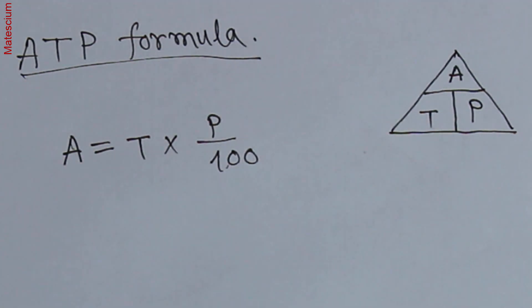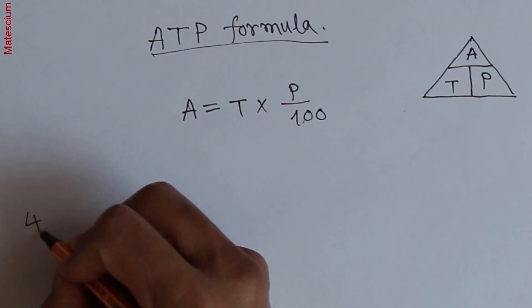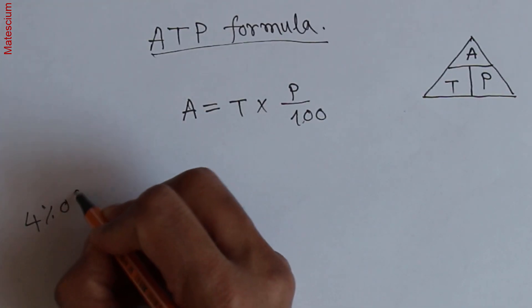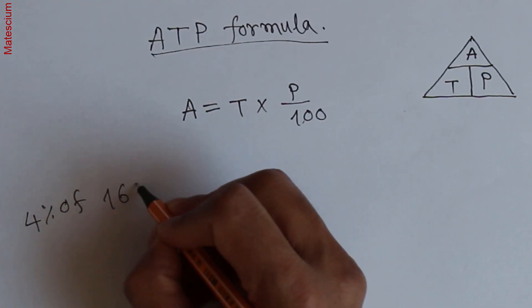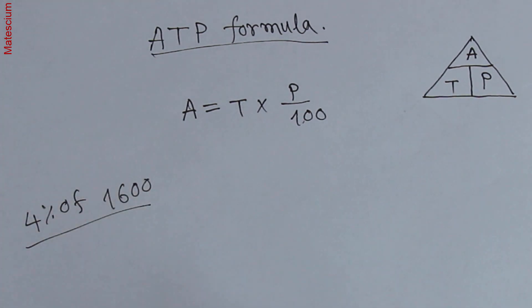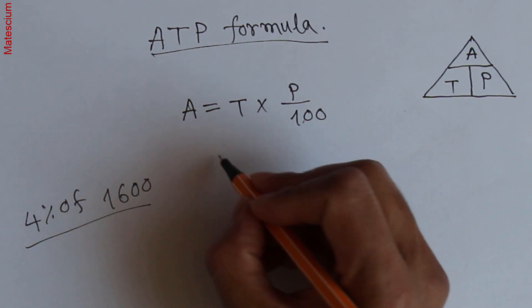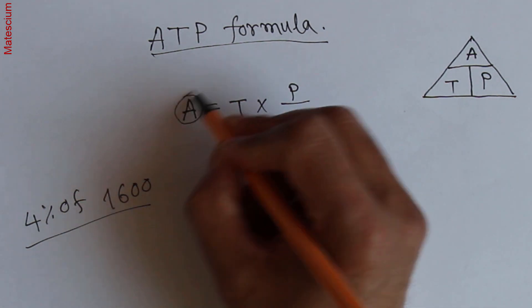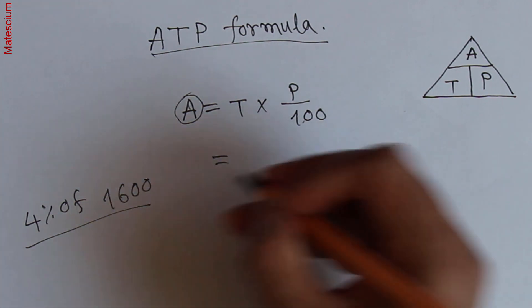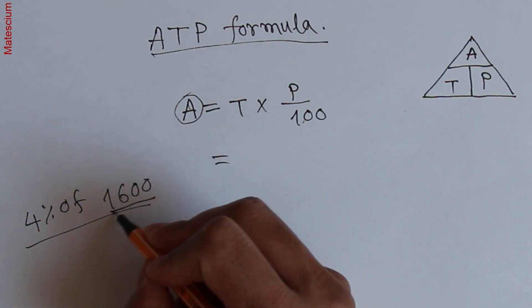Let us consider 4 percent of 1600. What is the value of 4 percent of 1600? So the question is what is the value, that means that is the asking value and we have to find out this value, asking value. So total number is 1600.